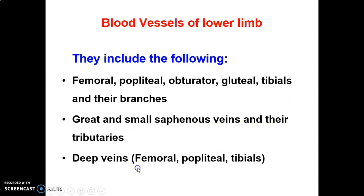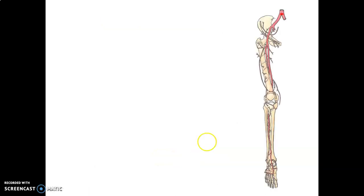The deep veins include the anterior and posterior tibial veins, popliteal veins, femoral veins, and tibial veins. Remember, the anterior and posterior tibial veins join to form the popliteal vein, and at the adductor hiatus the vein continues upwards as the femoral vein.